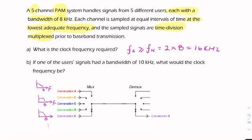That's the sampling frequency. But the question is asking for the clock frequency. Now remember, because we're taking a sample of each of these, then each frame will have slots corresponding to each of the five channels.